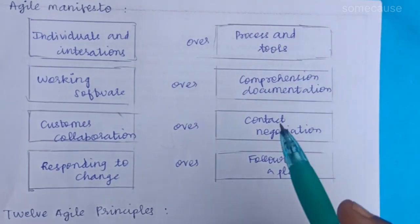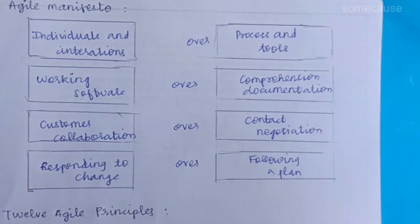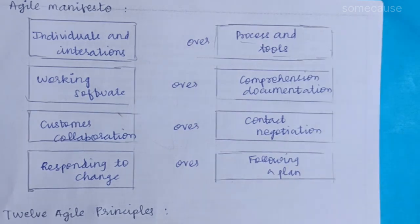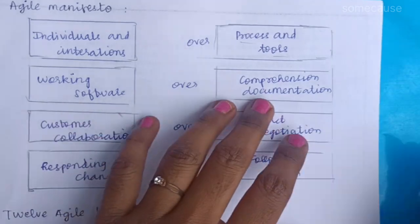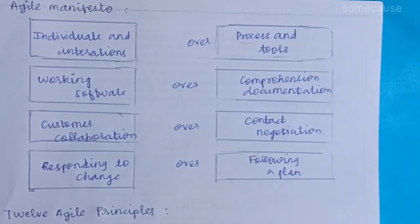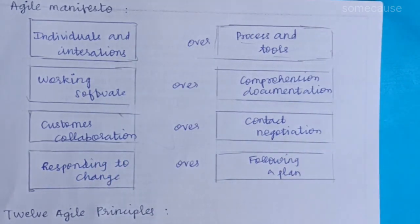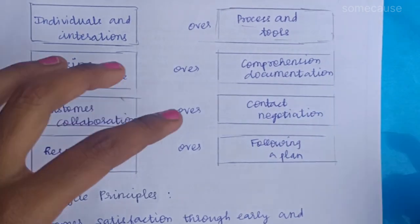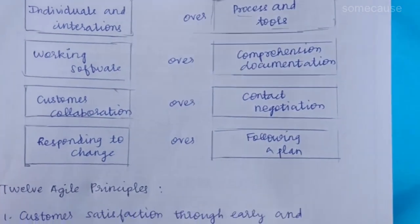Next, Agile Manifesto. First, in Agile Principles, we need to concentrate on individuals and interactions over processes and tools. Second, when we deliver working software, we need to concentrate on that over comprehensive documentation. Third, customer collaboration — this is the importance of the customer. If you do a negotiation, you need to do a negotiation. If there is a change, you need to respond. This is the Agile Manifesto.